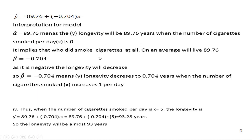Now, what is the beta coefficient? Beta is minus 0.704 — a negative value. When there is a negative value, the longevity y will decrease as x increases. When beta is negative, the longevity will decrease; if beta is positive, it would increase. So the longevity will decrease by 0.74 years when the number of smoked cigarettes increases by one per day. So somebody who adds one more cigarette per day will see their longevity decrease by 0.74 years.